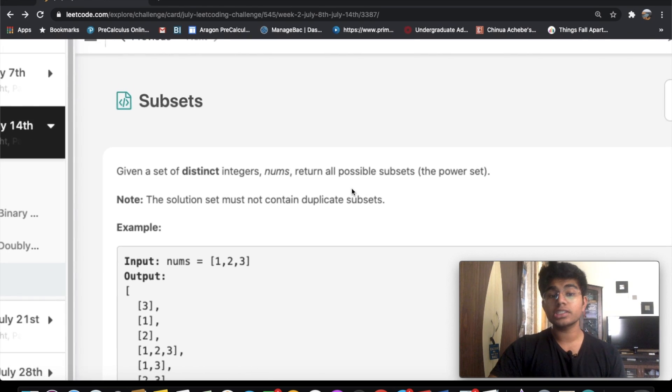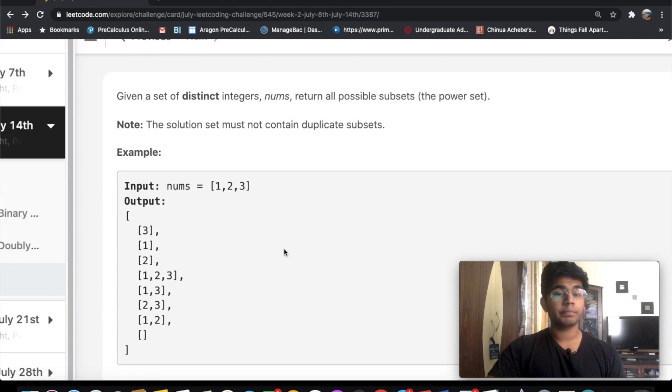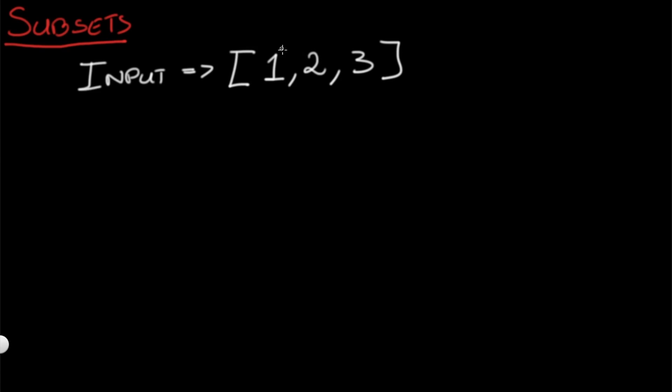Alright, so in this question we're given distinct integers in a list and our goal is to return all of its possible subsets without repeating anything. Let's see how we can solve this question. Let's say that we're given an input of this list, so we have 1, 2, 3.